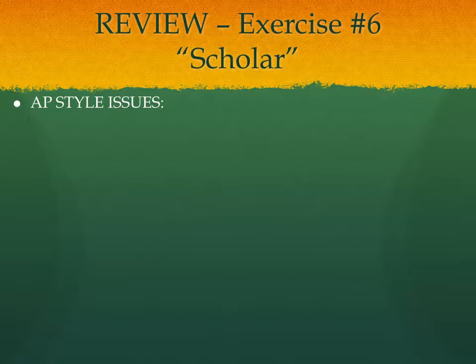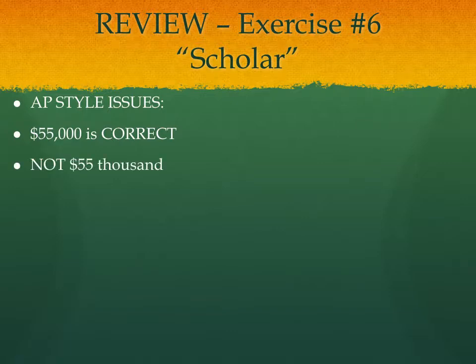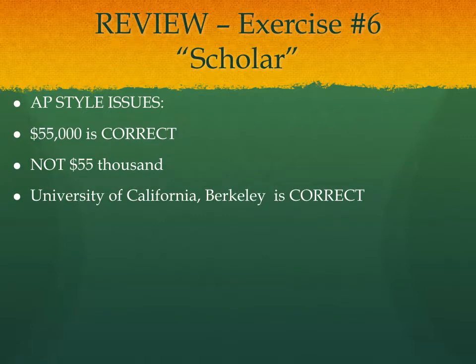Some AP style issues that were pretty common mistakes as I was correcting your work: first of all, money — dollars — $55,000. You use the dollar sign and then 55,000. That's correct. Not spelling out the word thousand.